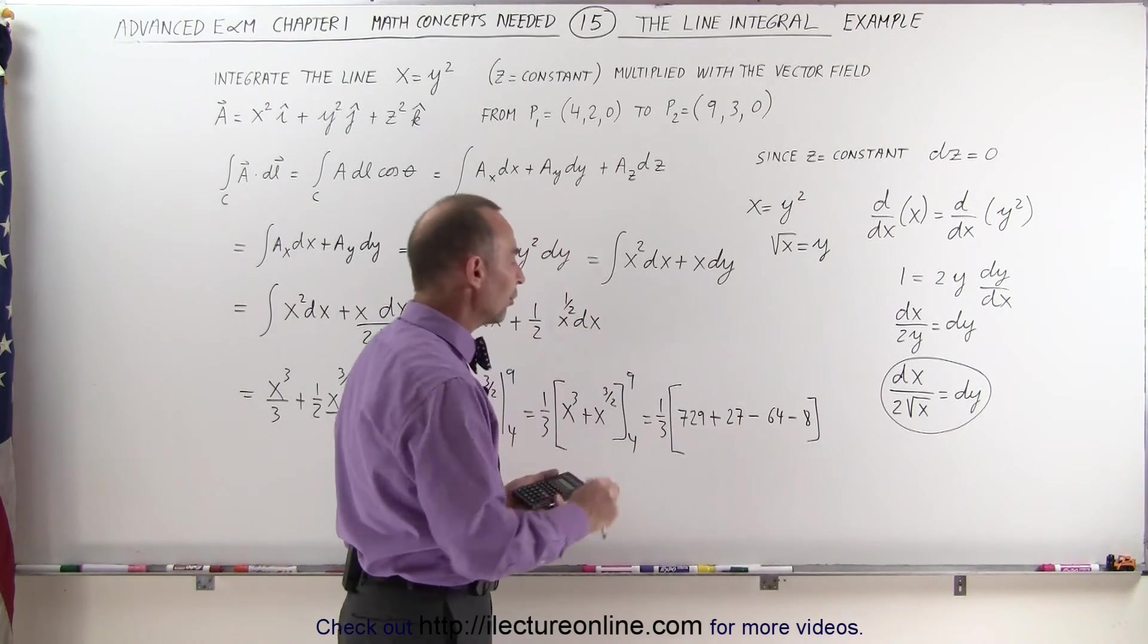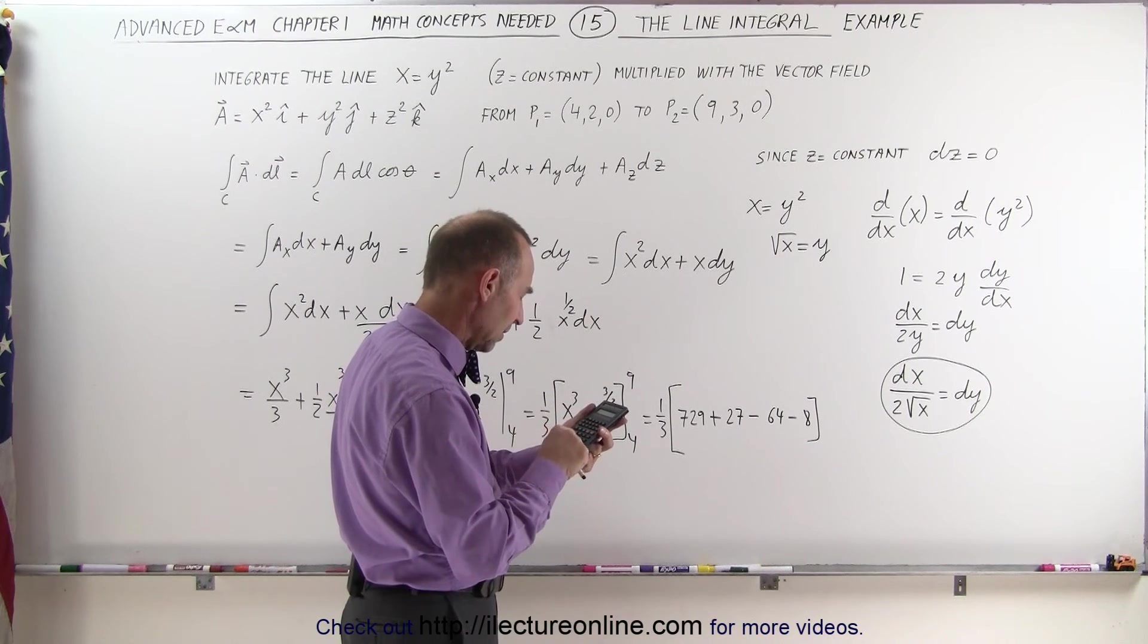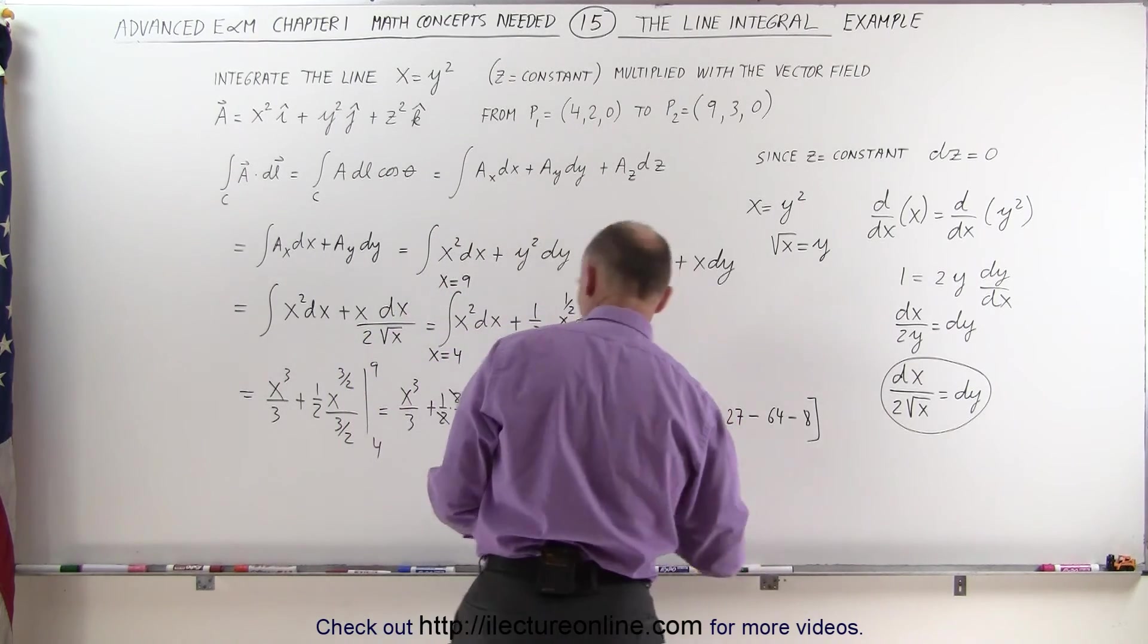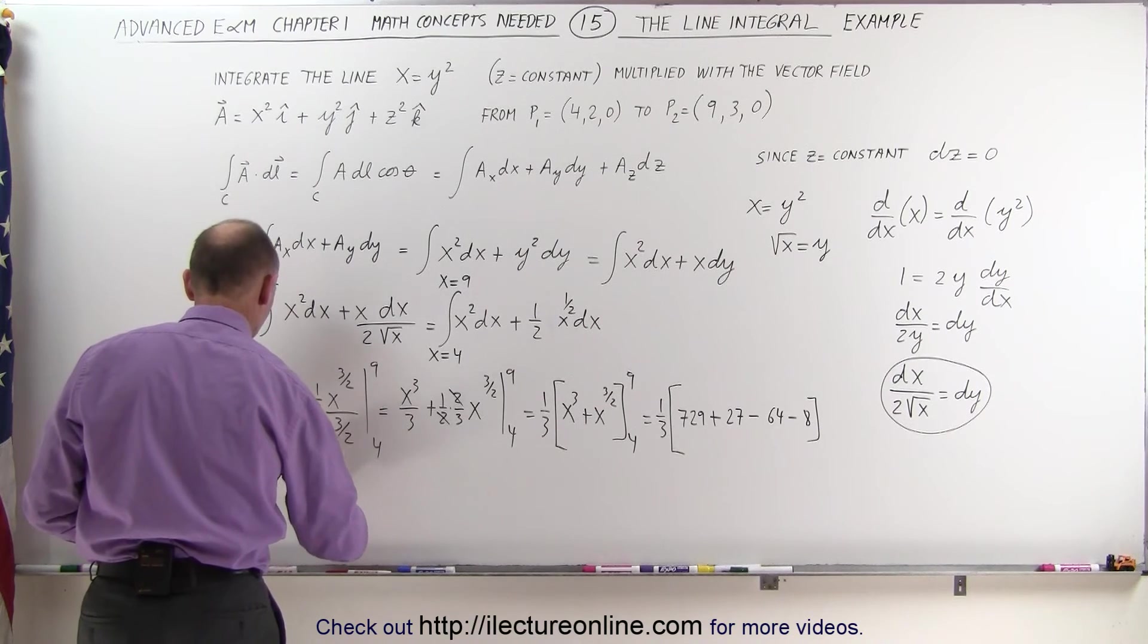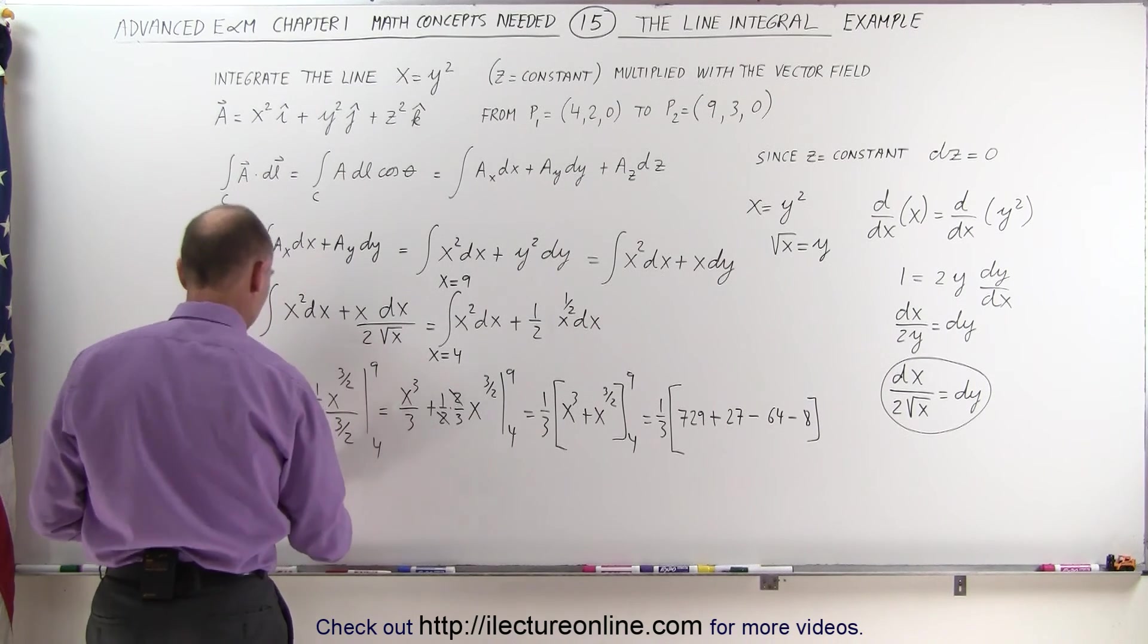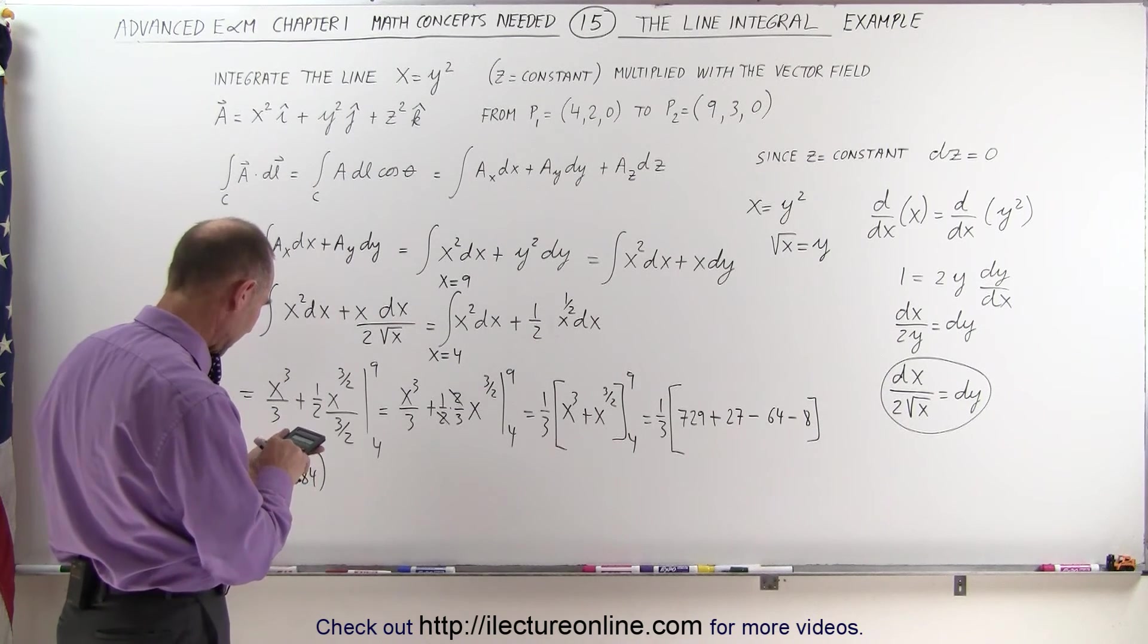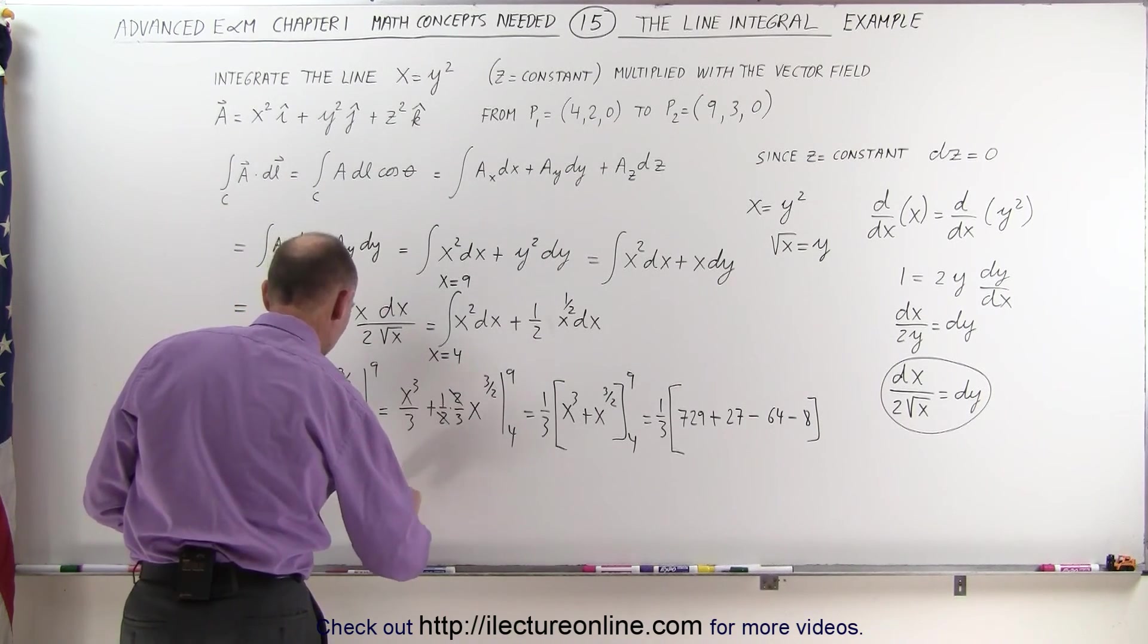So one-third times that, we get 729 plus 27 minus 64 minus 8. That would be 684. So this equals one-third times 684, and that looks like it's divisible by 3. Let's take that and divide by 3 equals 228.